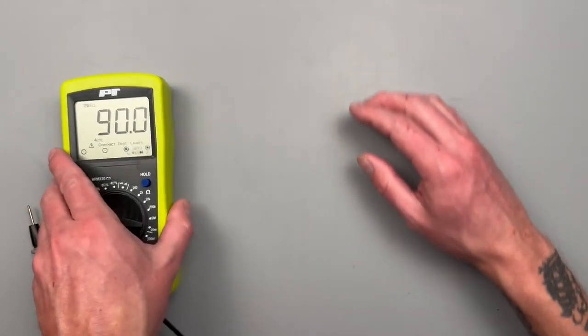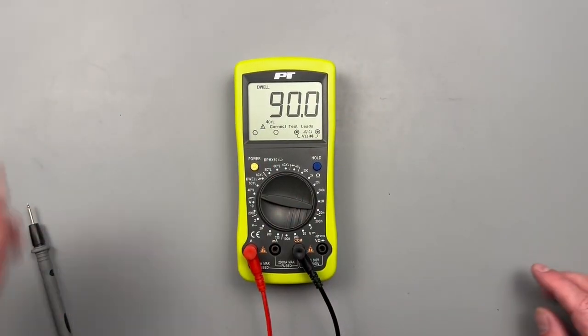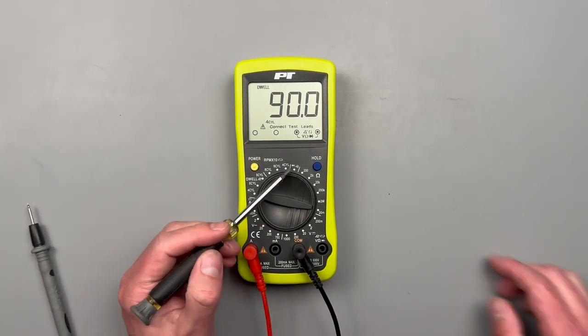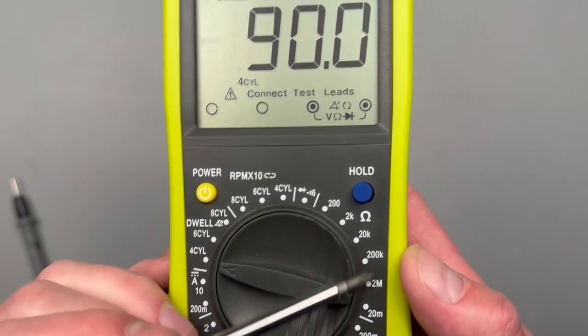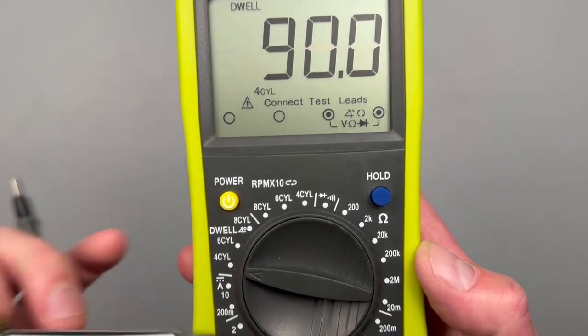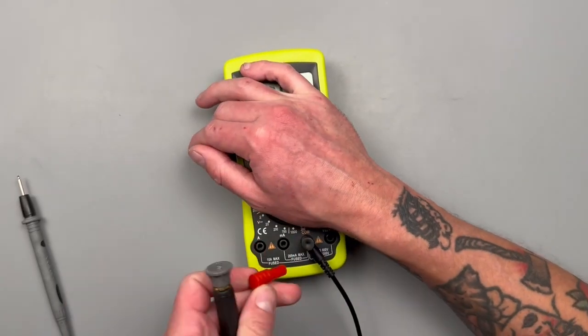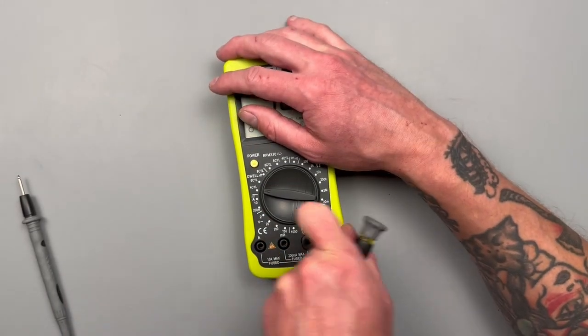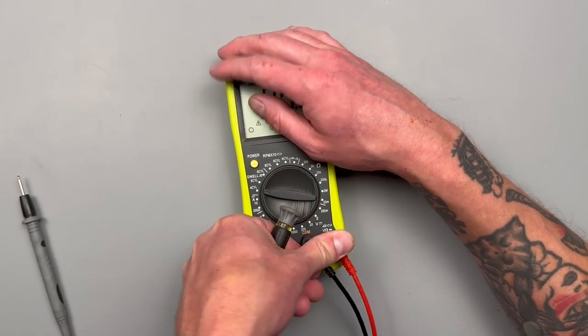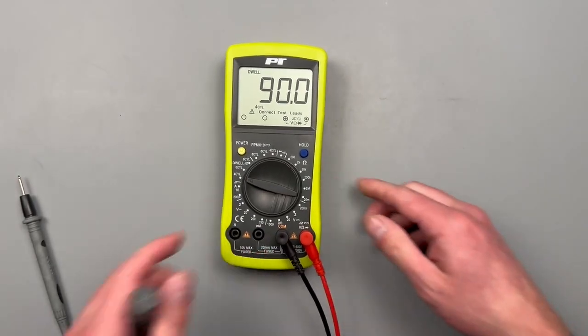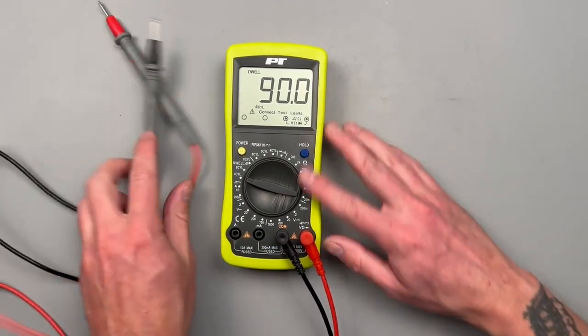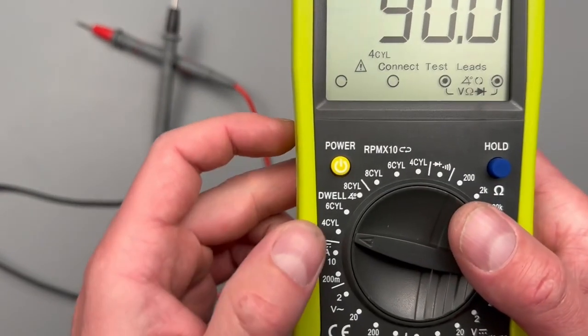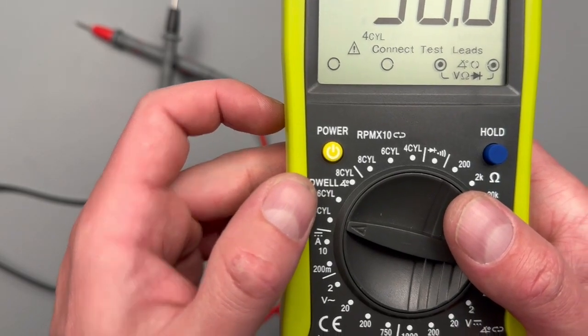Now onto the car specific settings. So far, all of the settings that we've gone over, this is diode, continuity, resistive, volts DC, volts AC, all that you're going to find on just about any modern digital multimeter available to you. These other two I haven't seen on any other meter and they're automotive specific. So first we're going to go over your dwell angle.